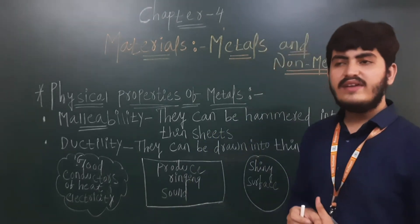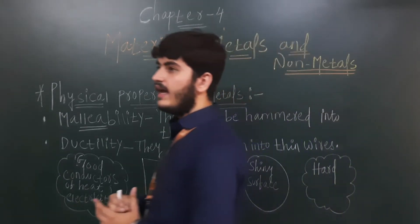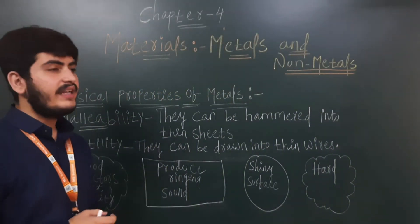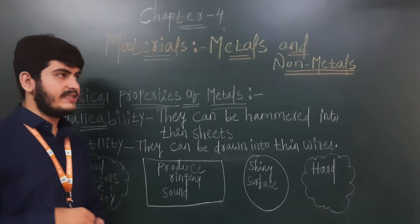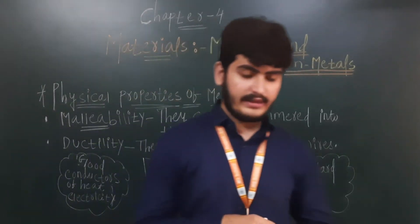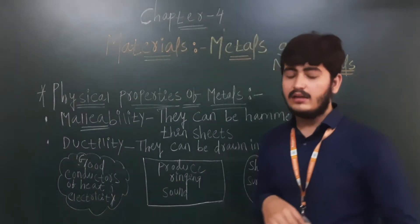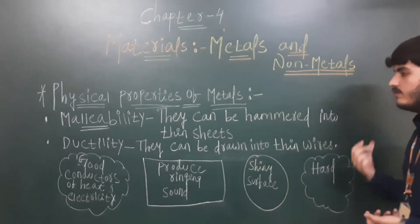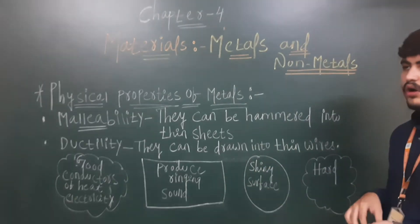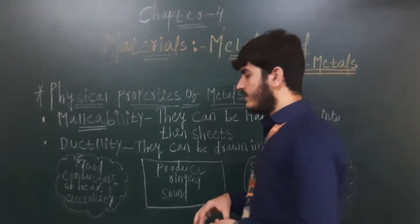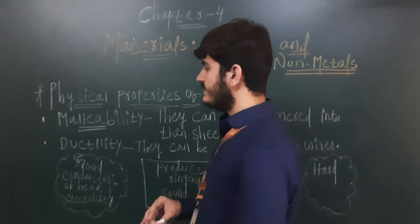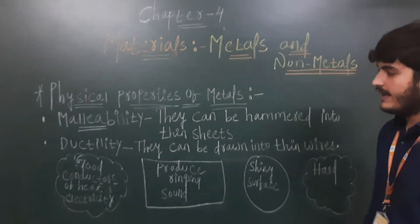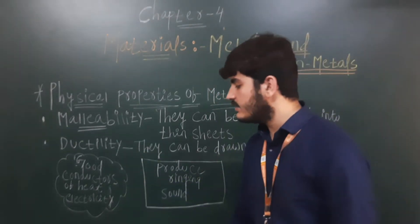Definitely you have not seen coal wires. The property of a metal in which it can be drawn into thin wires is called ductility. Ductility is the second physical property of metals.